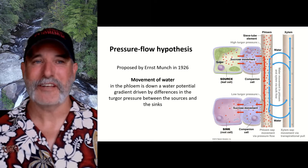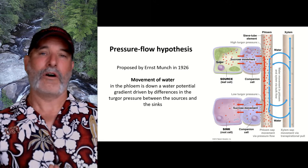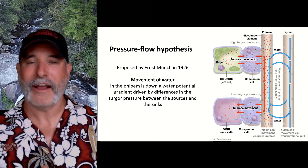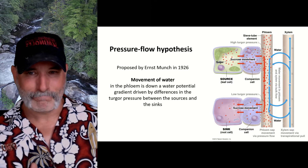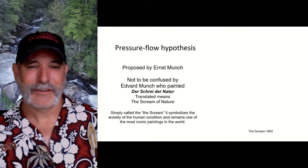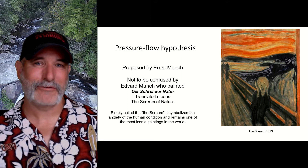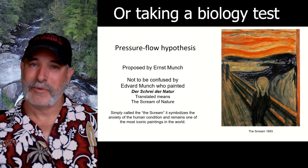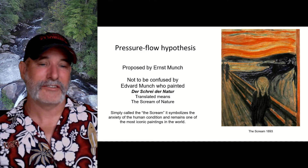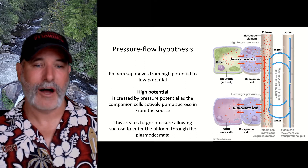So how do we move stuff from the source to the sink through the phloem? There's this pressure flow hypothesis, proposed by a guy named Ernst Münch in 1926. Don't confuse Ernst with Edvard — Edvard Munch is famous for 'The Scream' from 1893, which symbolizes the anxiety of the human condition and is one of the most iconic paintings in the world. Let's get back to the pressure flow hypothesis. The phloem sap is moving from high potential to low potential.